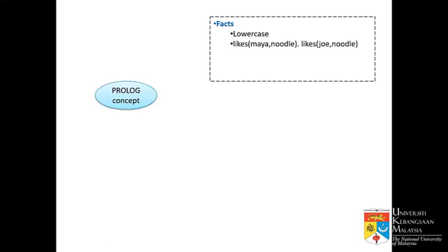There are a few concepts in Prolog. The first one is we have to declare a fact, and to declare a fact we use lowercase. So if you have learned predicate logic before, we have an object inside, and the way we read this is the first object, then the relationship, followed by the second object. So in this case it is 'Maya likes noodle' and 'Joe likes noodle'. The one in front is the relationship. The objects are the arguments, separated by comma, and you can have many objects inside the arguments.